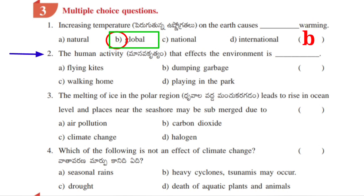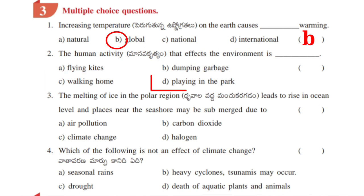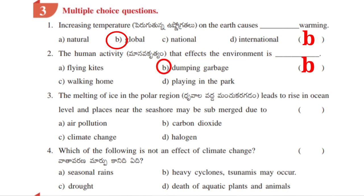Second question: the human activity that affects the environment is dash. A. Flying kites, B. Dumping garbage, C. Walking home, D. Playing in the park. Answer: B. Dumping garbage is the answer.